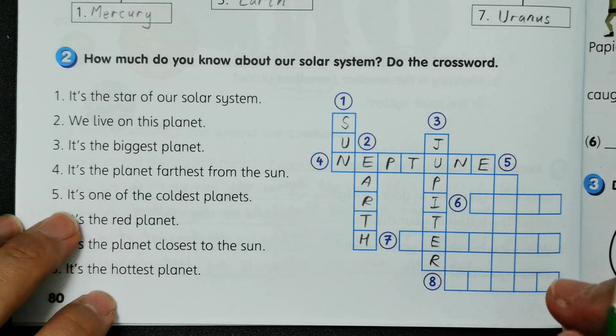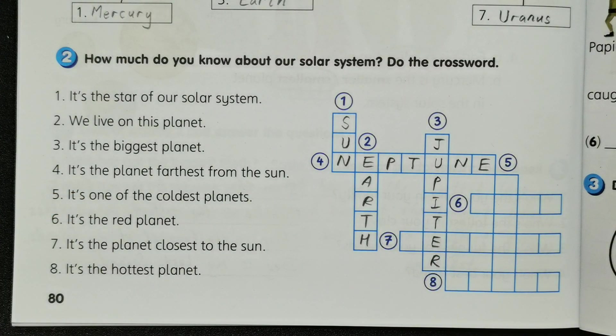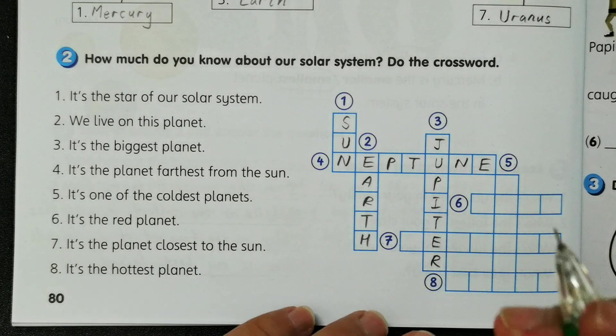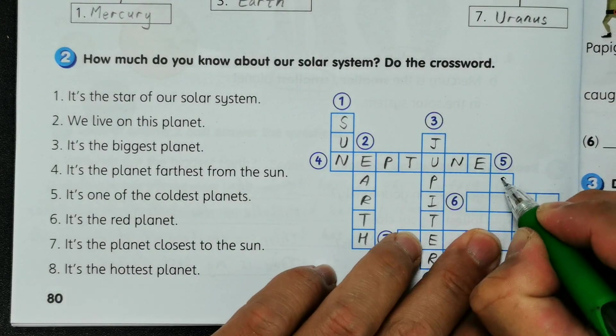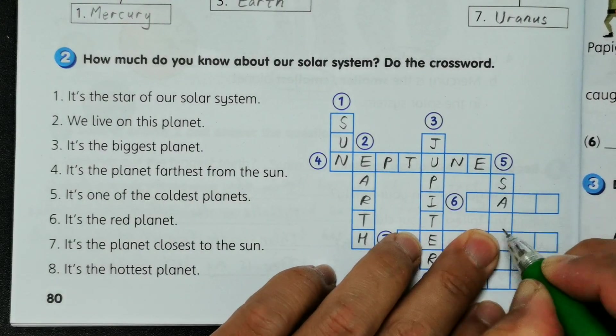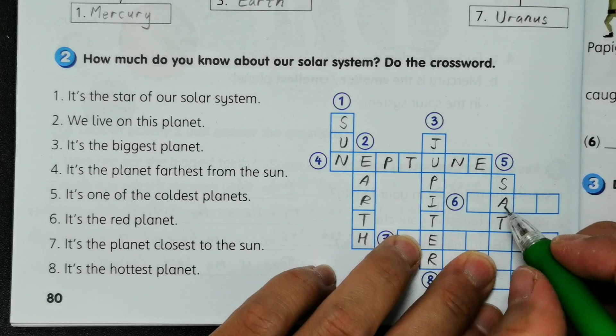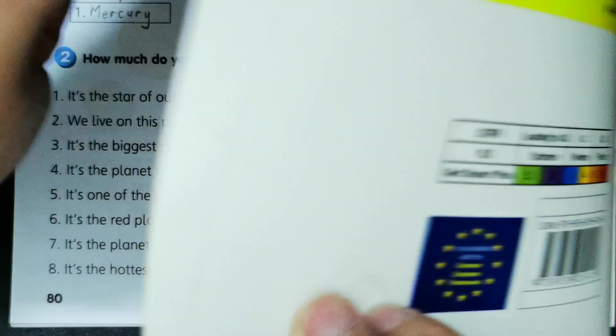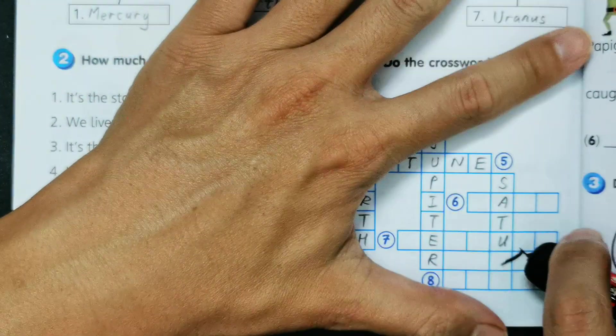And number five, it's one of the coldest planets, so coldest meaning very far from the Sun, so we have Saturn: S-A-T-U-R-N, Saturn.